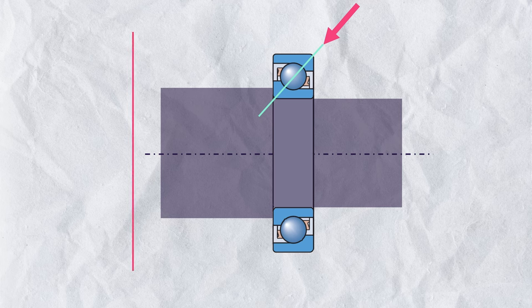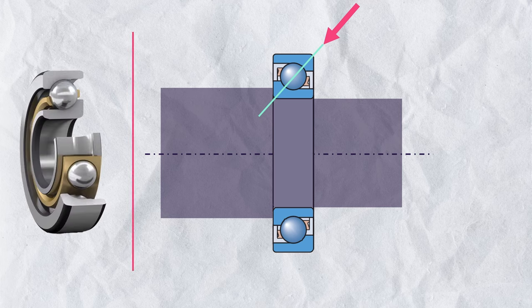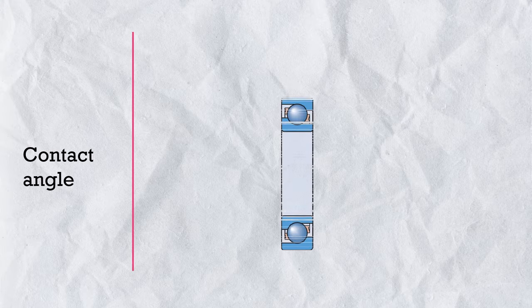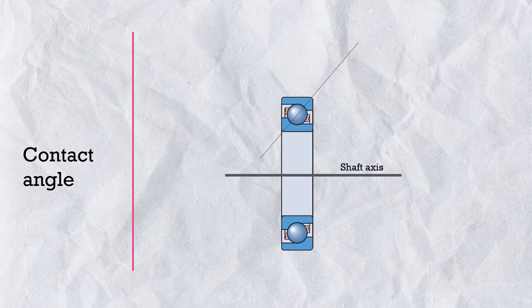We call this an angular contact ball bearing, and this is the main feature of all types of angular contact bearings. The first key parameter is the contact angle. Standard single row angular contact bearings come in different contact angles: 25 degrees and 40 degrees. In the super precision grade, there are also 15 degree and 18 degree options. So which contact angle should you use?